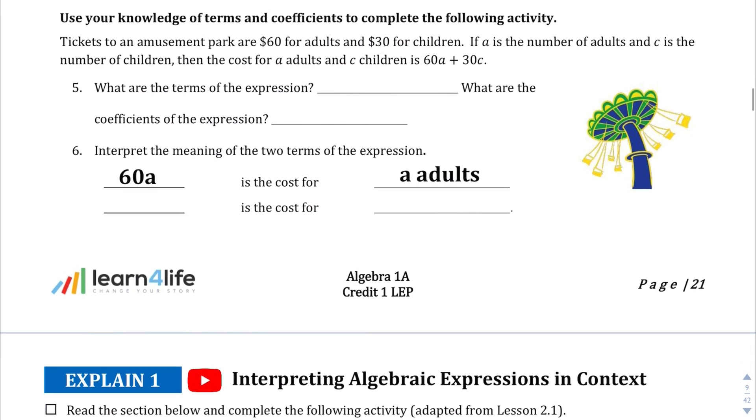Okay, question number 5. Tickets to an amusement park are $60 for adults, $30 for children. If a is the number of adults and c is the number of children, then the cost for a adults and c children is 60a plus 30c. What are the terms of the expression? Well, we just learned this is a term and this is a term. So our terms are 60a and 30c. But be careful, because the minus, our term there is negative 30c. The coefficients are 60 and negative 30. Be careful for that sign.